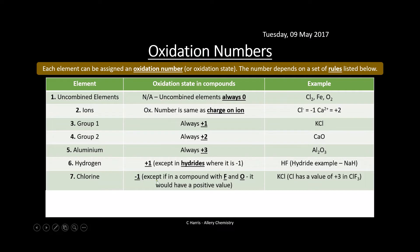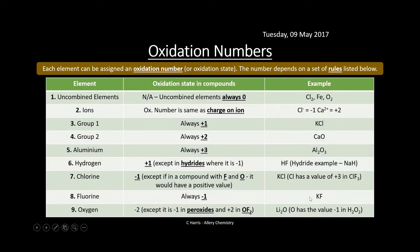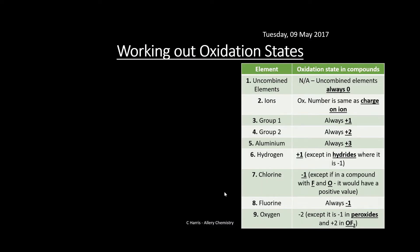The more electronegative element takes priority in terms of oxidation number. Fluorine is always −1 regardless of what it is bonded to when combined — for example in KF. Oxygen is always −2, except it is −1 in peroxides and +2 in OF₂, again because fluorine is more electronegative and takes priority. For example in lithium dioxide oxygen is −2, but in hydrogen peroxide H₂O₂ oxygen is −1. Make sure you know the rules and look out for peroxides.